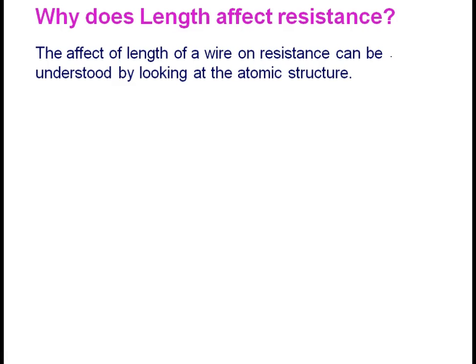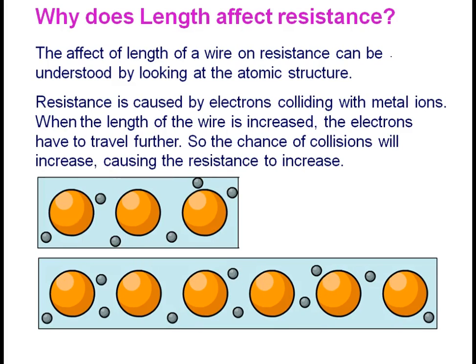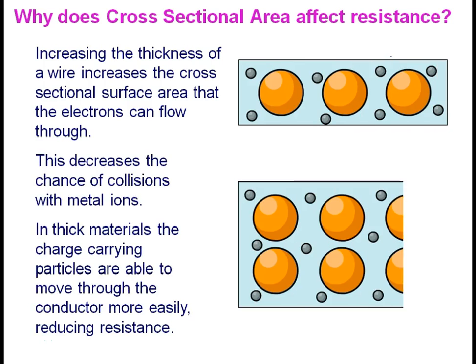Why does length affect resistance? The resistance is caused by electrons colliding with metal ions. When the length of the wire is increased, the electrons have to travel further, so the chance of collision increases, causing the resistance to increase. Increasing the thickness of a wire increases the cross-sectional area that electrons can flow through, decreasing the chance of collision with metal ions.